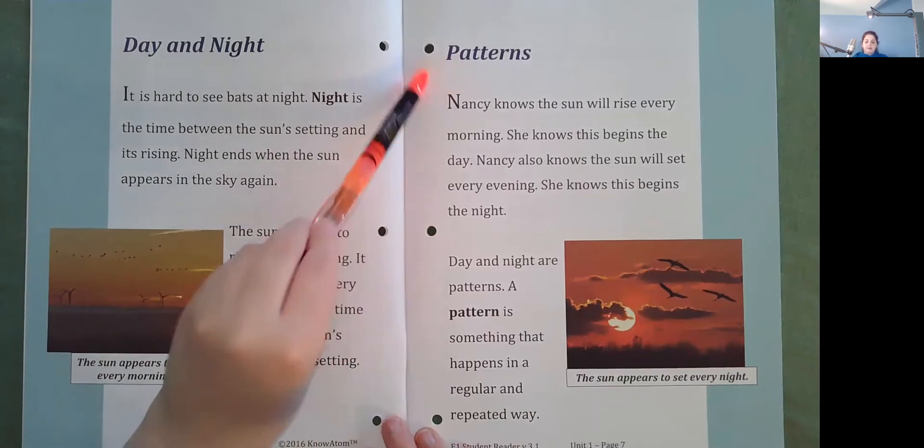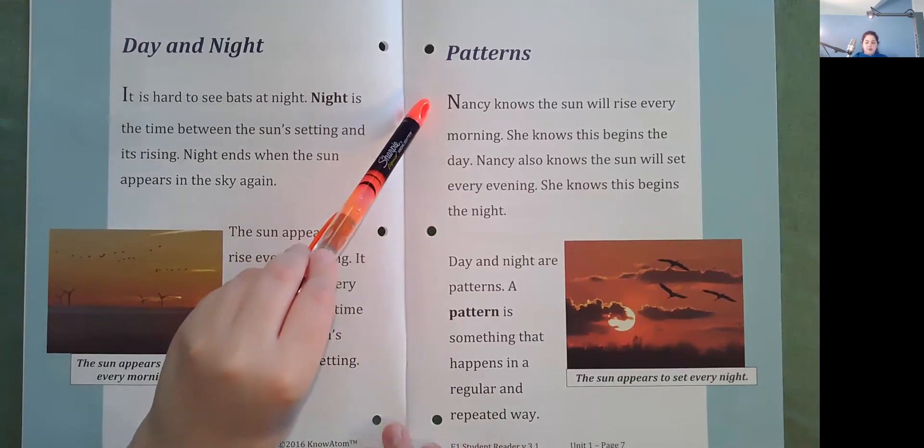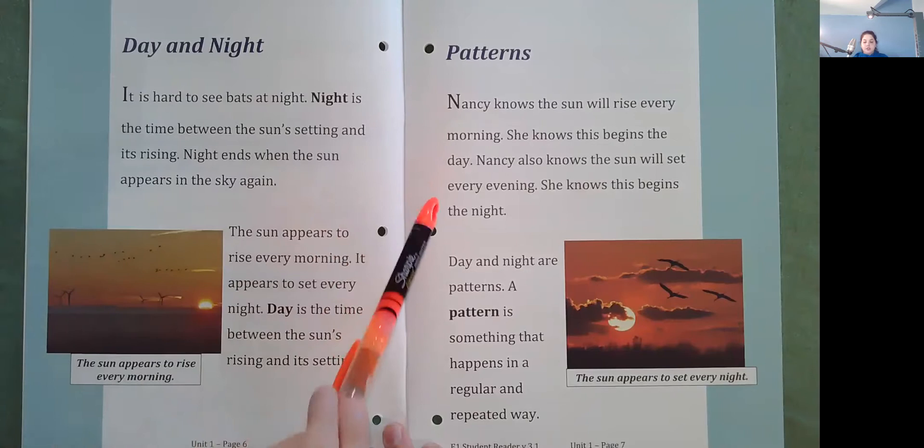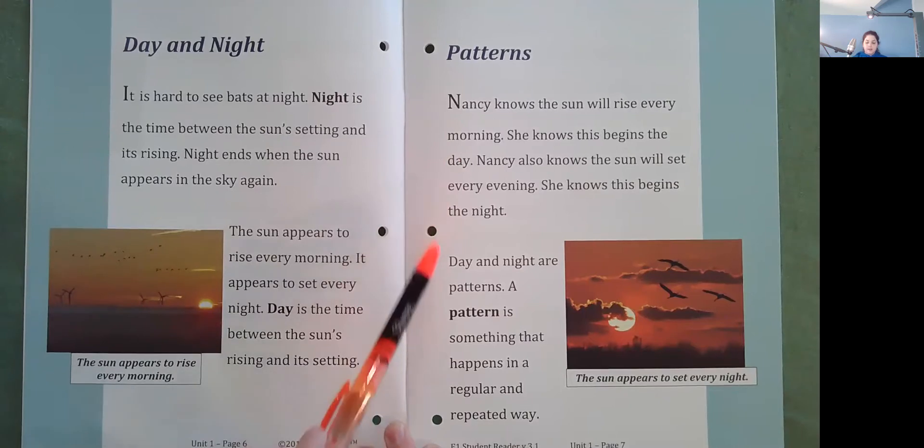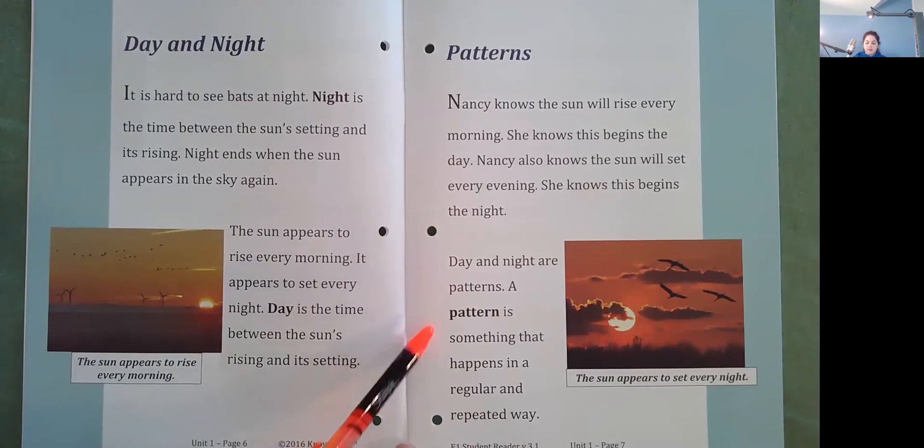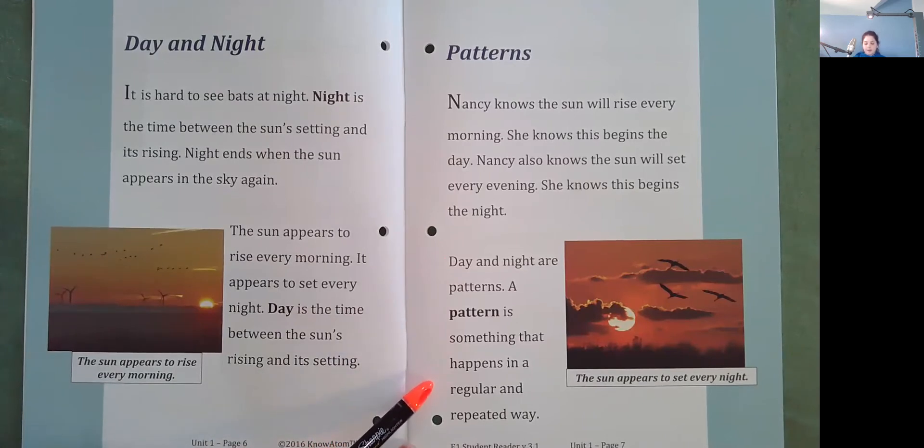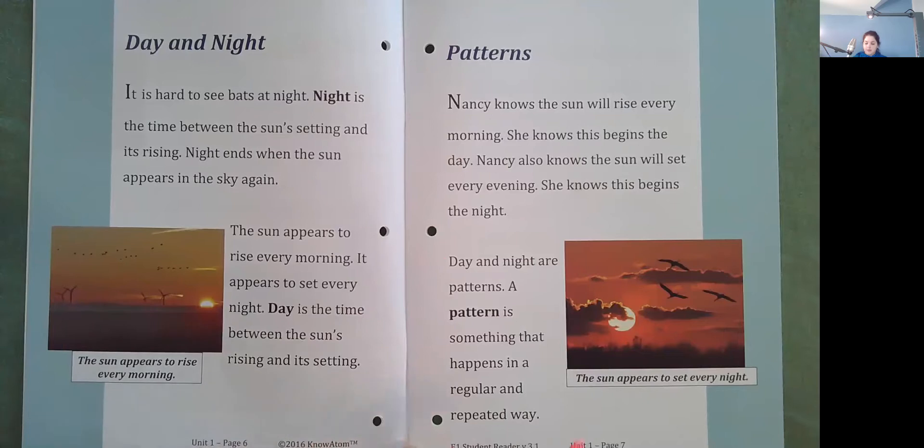Patterns. Nancy knows the sun will rise every morning. She knows this begins the day. Nancy also knows the sun will set every evening. She knows this begins the night. Day and night are patterns. A pattern is something that happens in a regular and repeated way. So here's the sun setting.